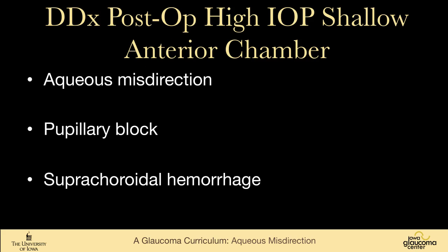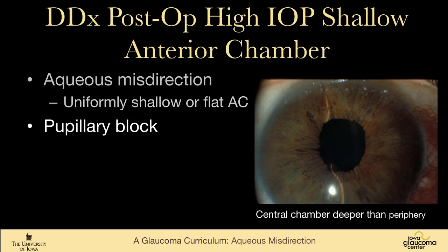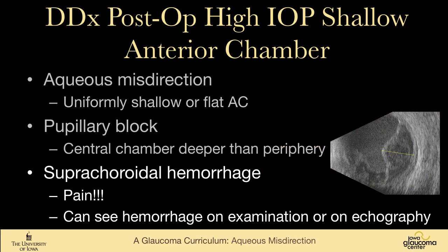It's useful to go through the differential diagnosis of high intraocular pressure with a shallow anterior chamber in a post-operative patient — there are basically three things. Aqueous misdirection has a uniformly shallow or flat anterior chamber. Pupillary block, seen less often post-operatively, shows the central chamber deeper than the periphery with the iris bowed forward. A suprachoroidal hemorrhage can also cause a diffusely flat or shallow anterior chamber — pain and hemorrhage visible on examination or ecography set it apart.